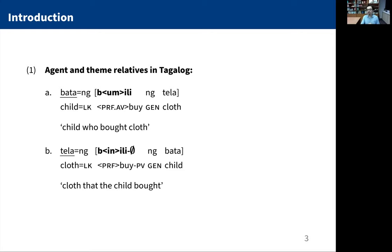Starting with Tagalog, Tagalog is a predicate-initial or verb-initial language. We have post-nominal relative clauses, at least as the canonical form. In example 1a, we have 'child who bought cloth.' In 1b, we have 'cloth that the child bought.' We get two different forms of the verb — bumili and binili — and really, when you look at the word order, that is the only cue that in 1a we have an agent relative, and in 1b a theme relative.